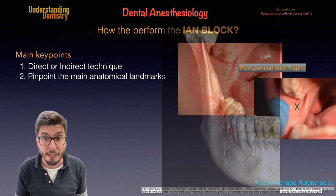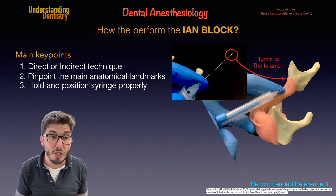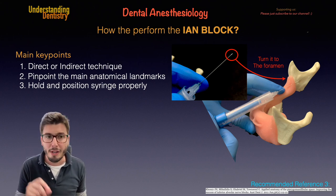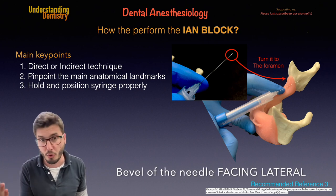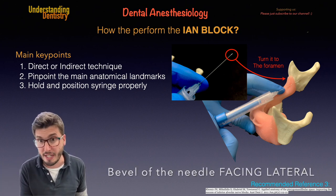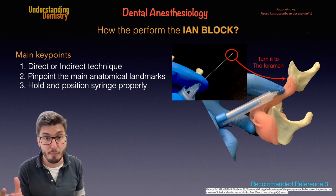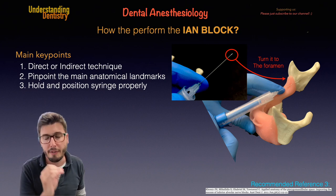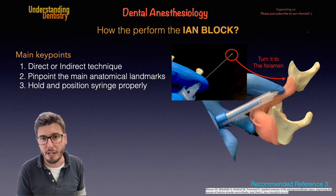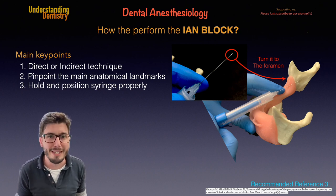Key point number three is very important: hold and position the syringe properly. One of the main aspects is to remember that we need to turn the bevel of the needle — this concavity of the needle — towards the mandibular foramen. This is important for you to release the anesthetic material very close to the inferior alveolar nerve, which will actually be a little bit higher than the mandibular foramen itself.